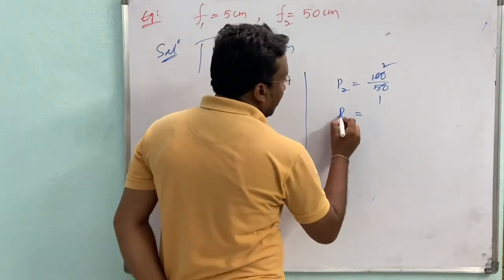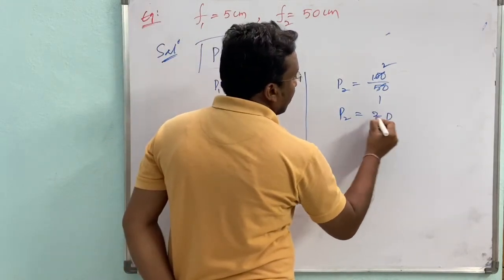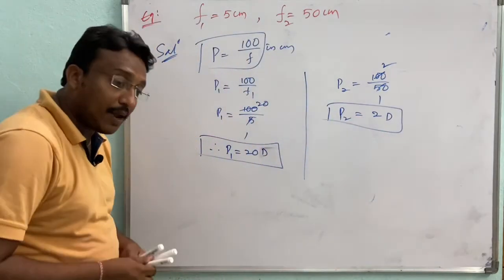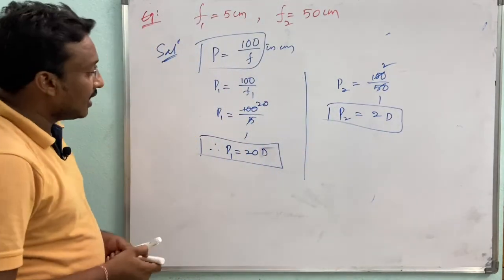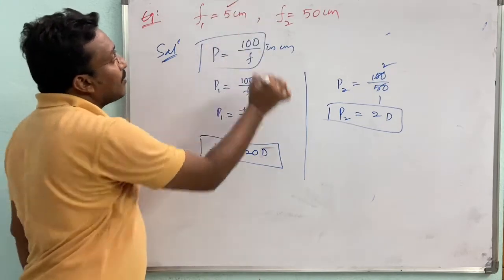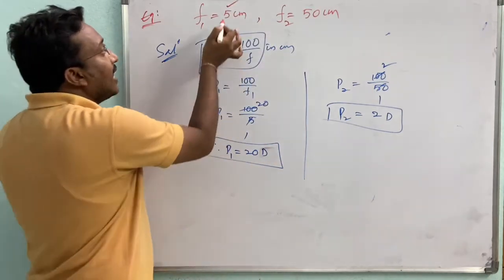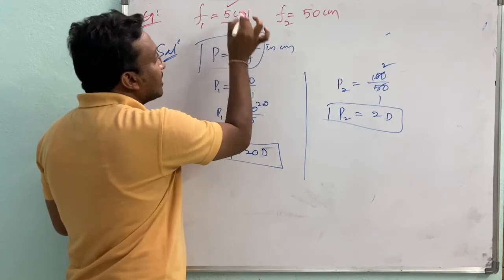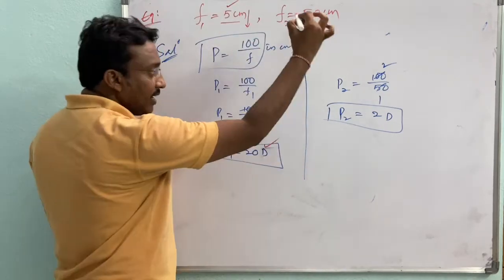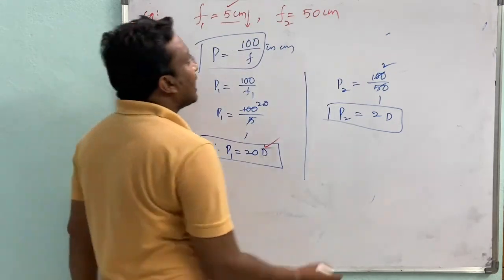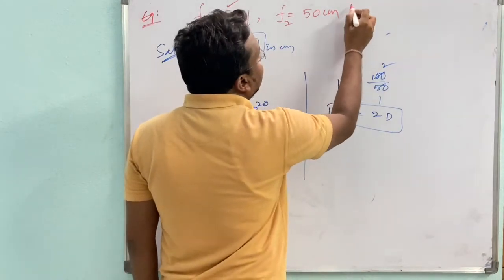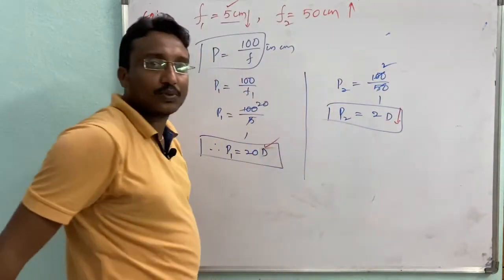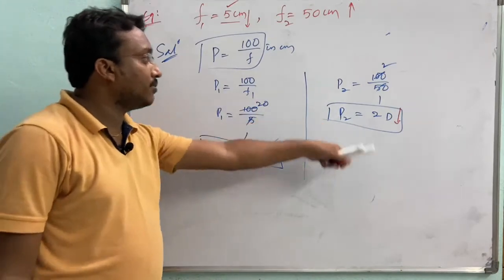P2 = 100/50 = 2 diopters. The first lens has higher power. Notice that in the first case the focal length is less so power is more, and in the second case the focal length is more so power is less.